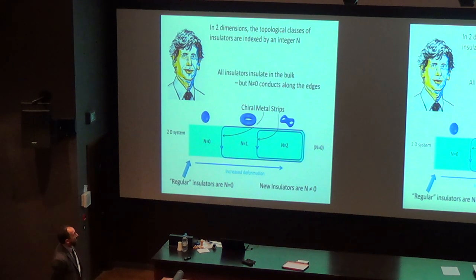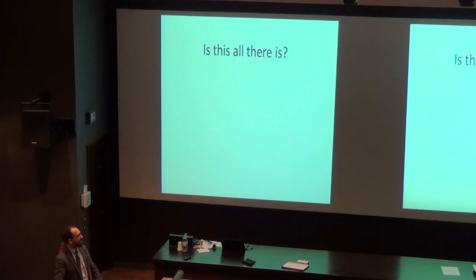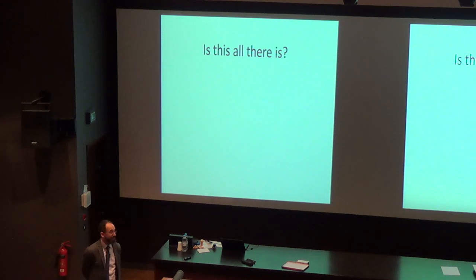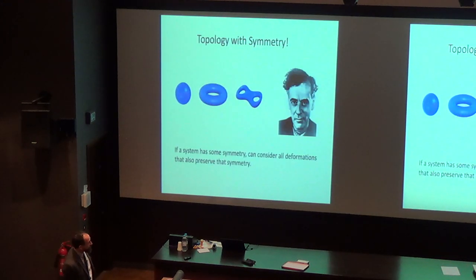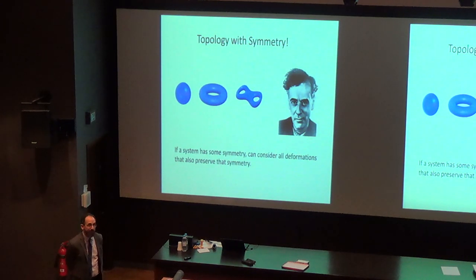It's astronomically precise, because the topological distinction between states means everything is indexed by an integer, and integers are precise. The moral is: all insulators insulate in the bulk, but the n-not-equal-to-zero insulators — the non-trivial insulators — conduct along the edges. The vacuum out here is n=0 also, so the edge of n=1 is entirely metallic, and the edge of n=2 is entirely metallic, and it's these metallic strips that are responsible for the quantized Hall conductance.